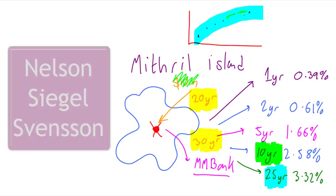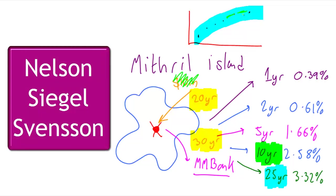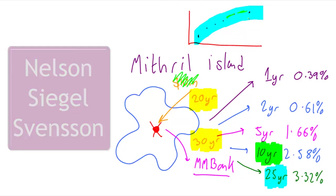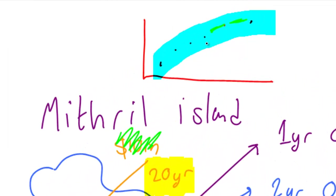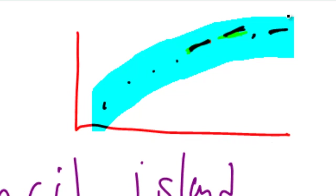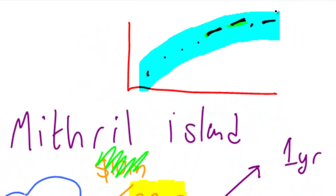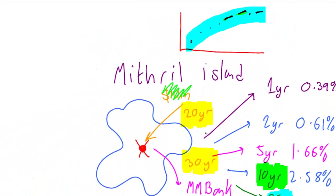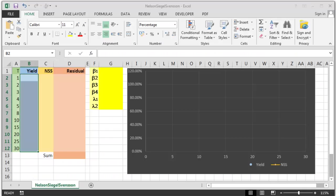Well, we can. We can use a thing called the Nelson-Siegel-Svensson method to generate really good educated guesses as to what those in-between bits should be, and what those extrapolated points should be too. Let's bring up a special Excel spreadsheet.